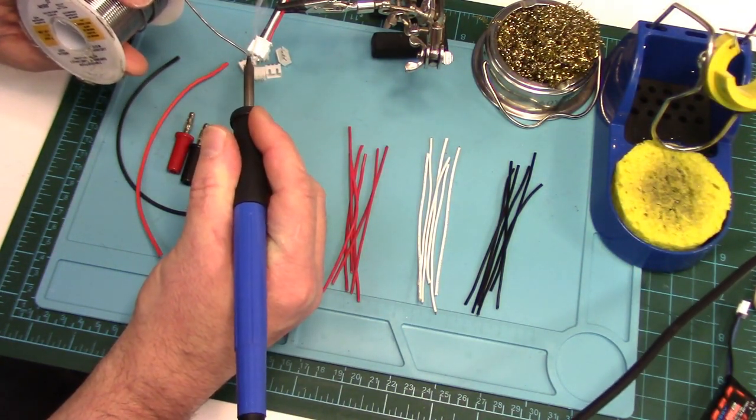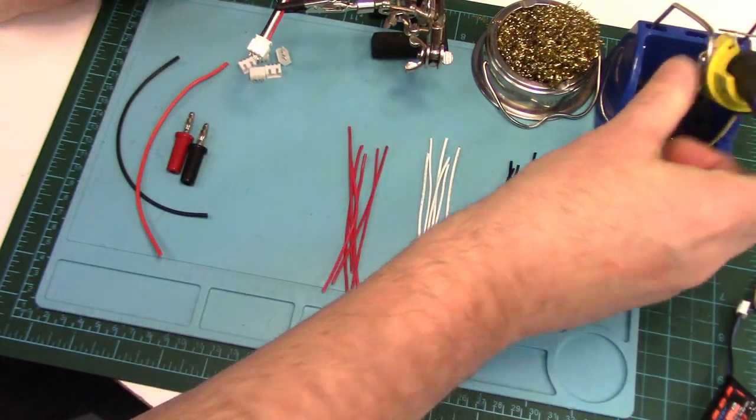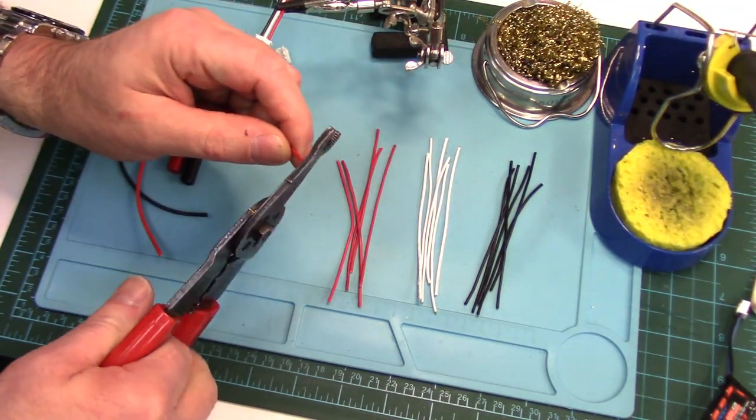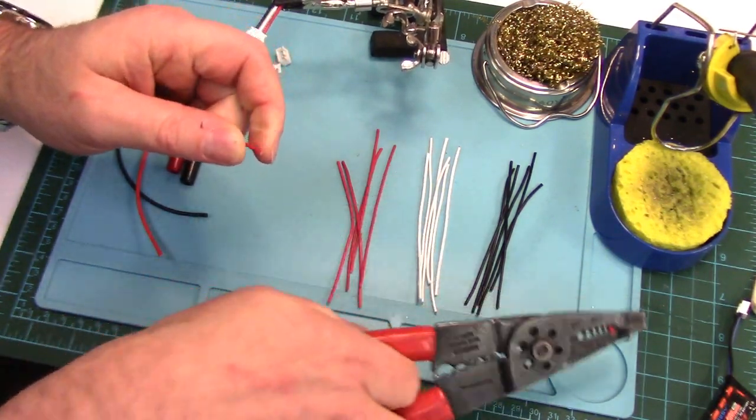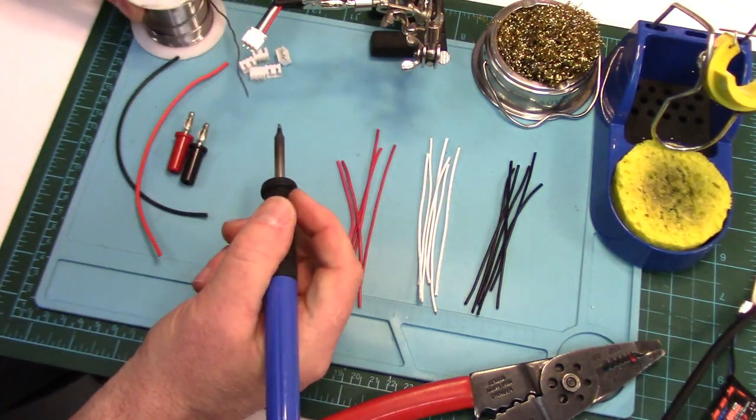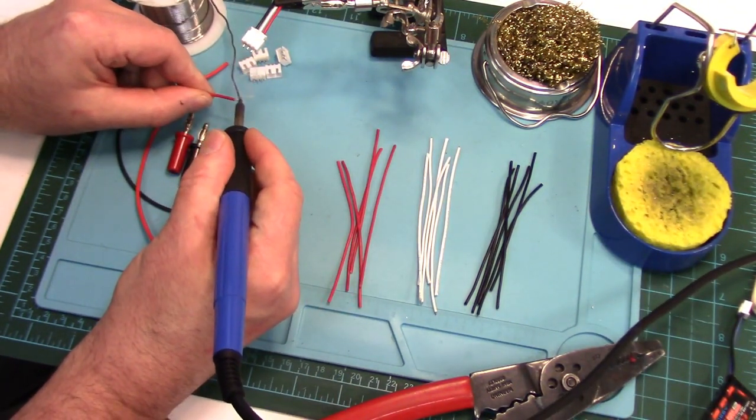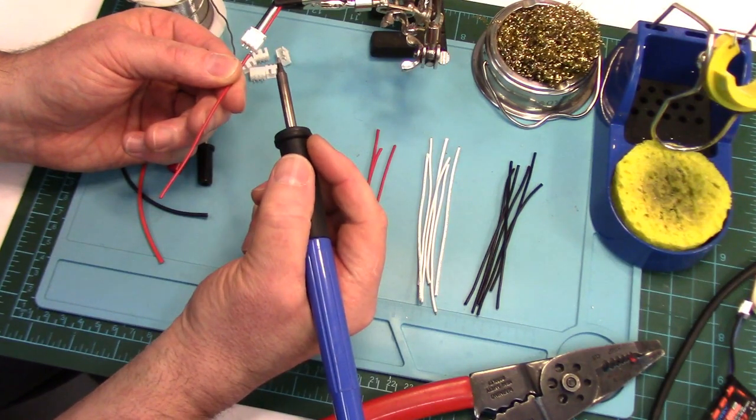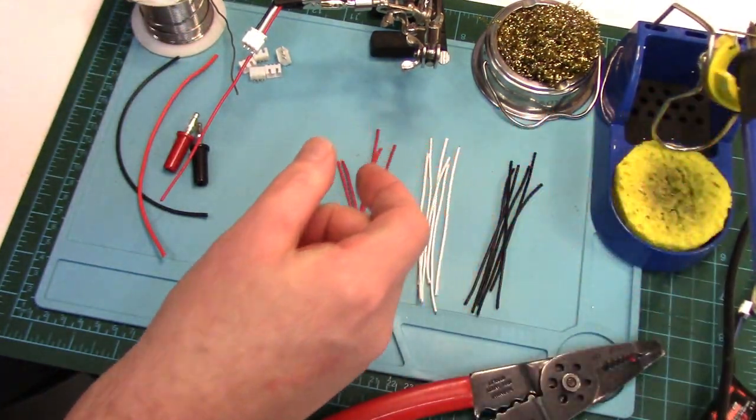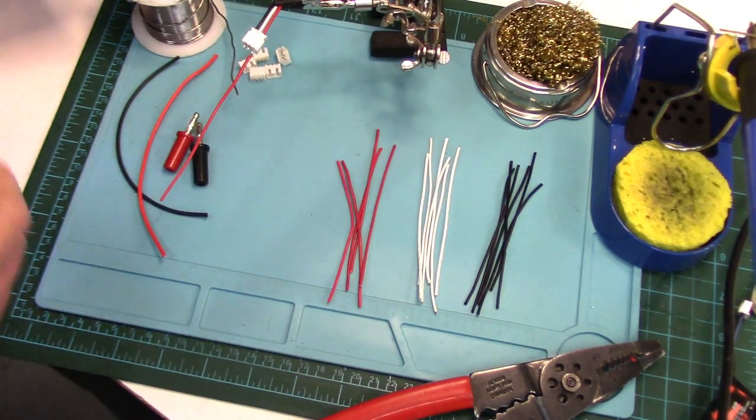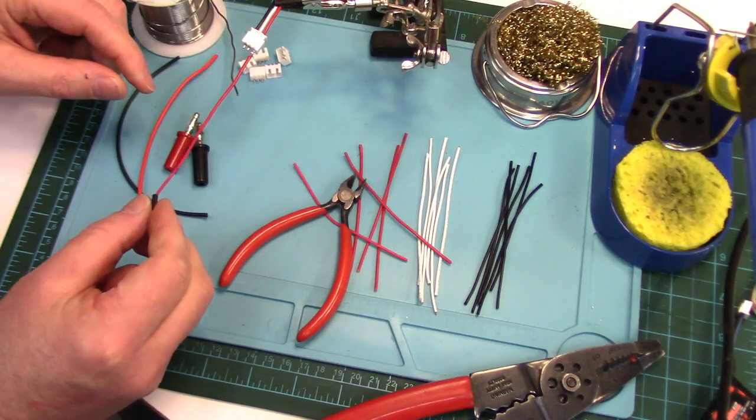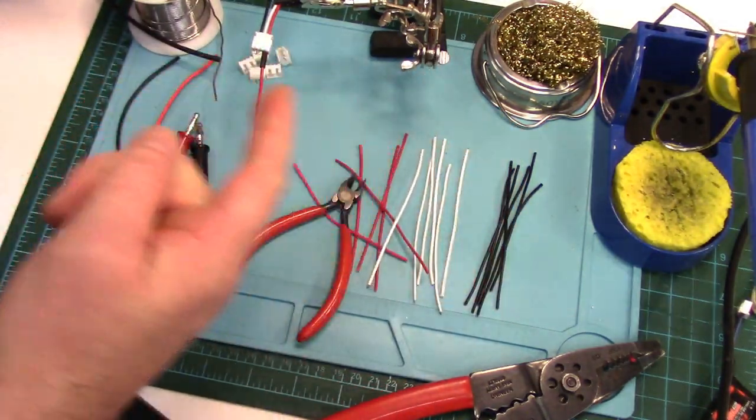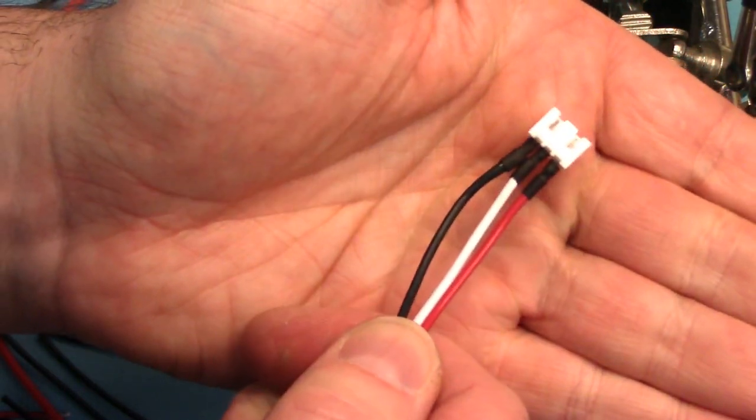Tin them first. And yeah, I should probably, probably should have had all these stripped ahead of time, but you'll get the idea. So I'll just strip a little bit off. Tin it. Tag it. And then get our heat shrink. Put it over. And then we have to do that for the white, the black. One down, five more to go.